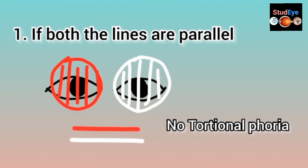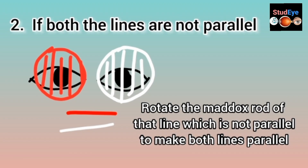The red streak is associated with the right eye, since the red Maddox rod is placed in front of the right eye, and the white streak corresponds to the left eye. When the patient does not have any torsional phoria, both streaks will appear parallel to each other — the patient will say they are equally aligned. This indicates the patient is orthophoric with no incyclo or excyclophoria.